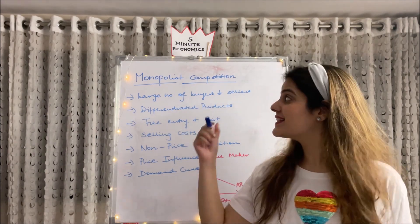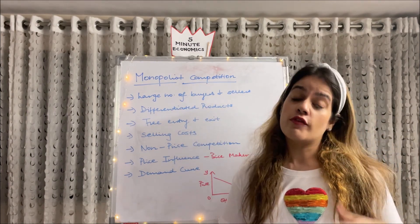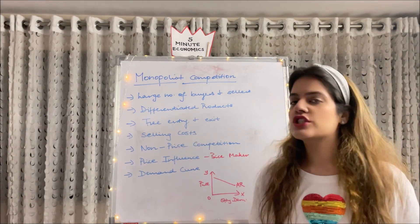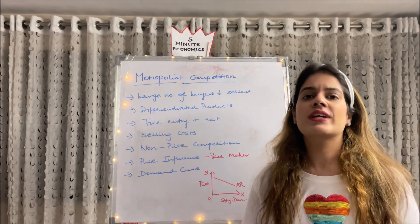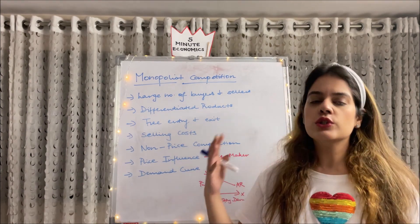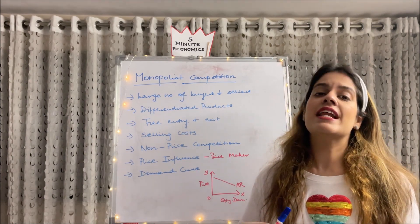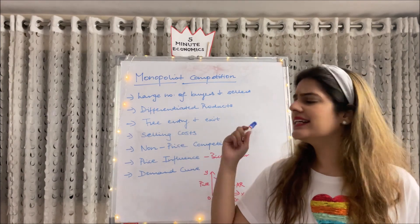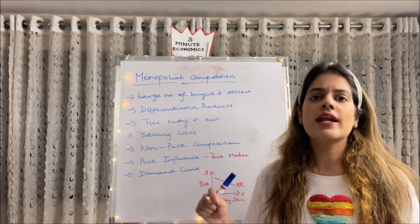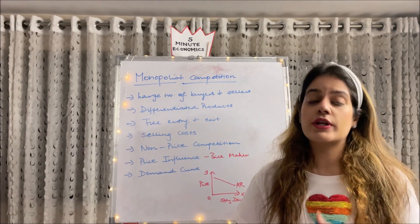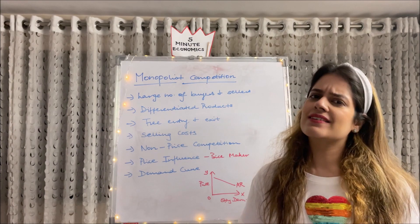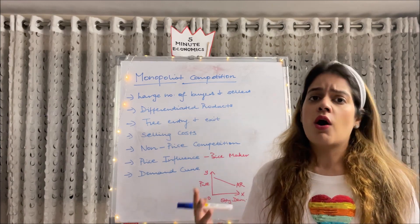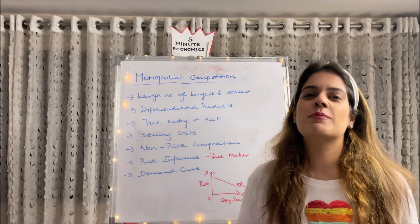Coming to our third type of market structure — monopolistic competition. The name itself says it all: it is a combination of features from both perfect competition and monopoly. Number one, just like in a perfectly competitive market, there is a large number of buyers and sellers, so each individual has a negligible effect on rivals. Secondly, firms are selling differentiated products — there are substitutes, but not close substitutes. For example, in the automobile industry we have Tata, Hyundai, Honda, Toyota — so many companies in this sector.